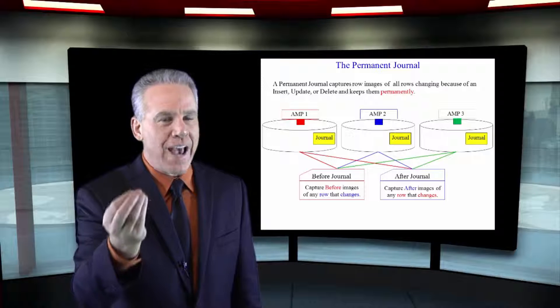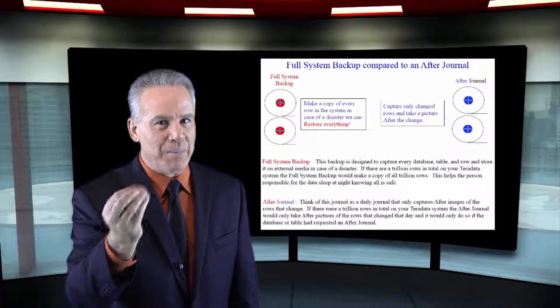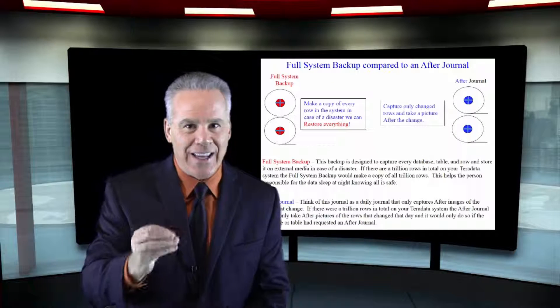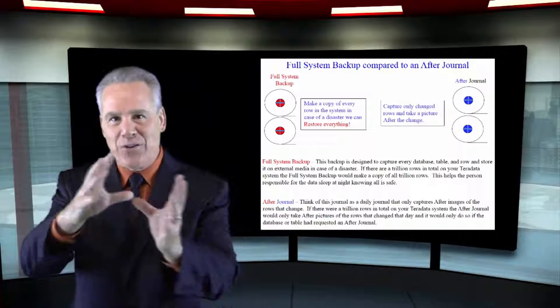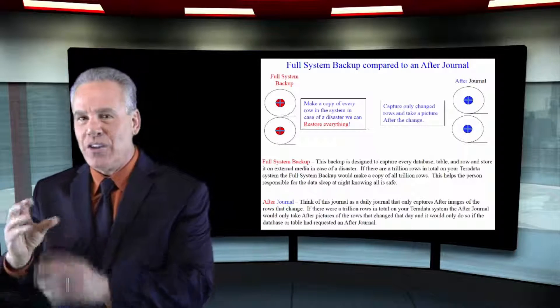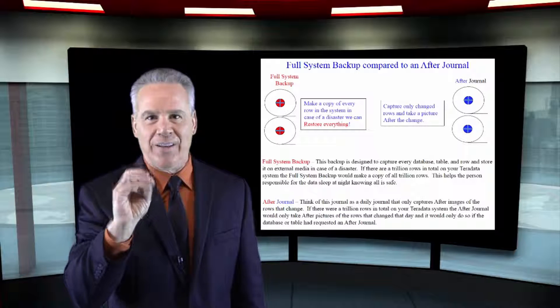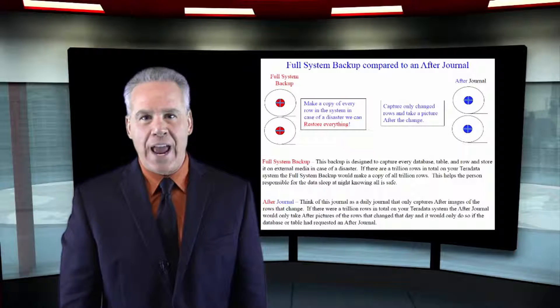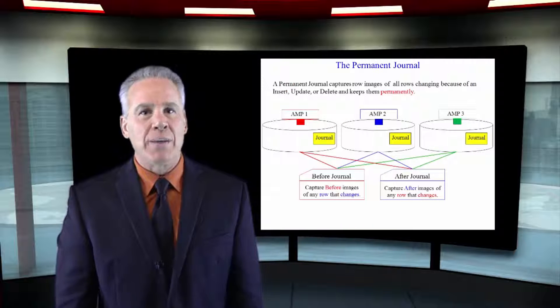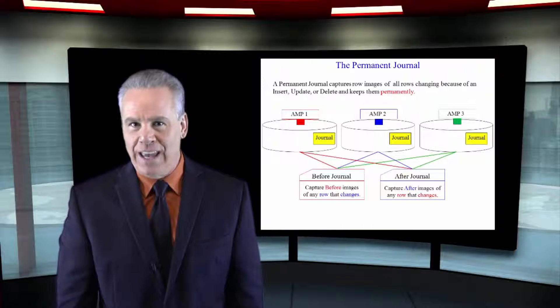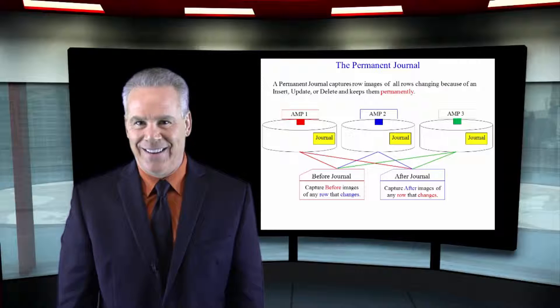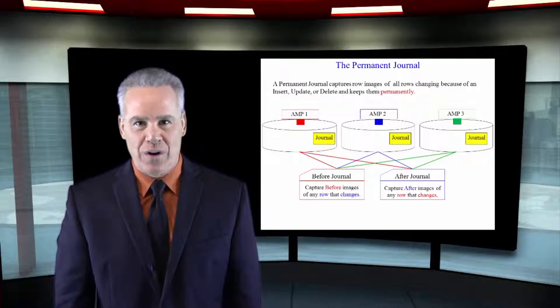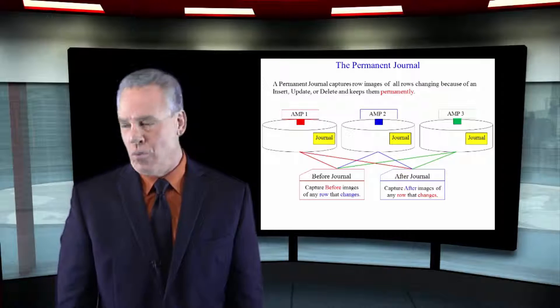Or you've backed up the system with a full system backup, and you need to take the after journal and recreate those transactions so that you've lost nothing. A before or after journal is going to take a before or after picture and the idea is to store it permanently so you can restore and roll back or roll forward.